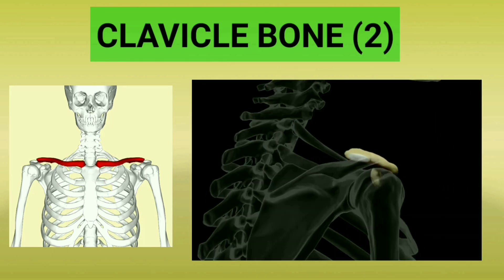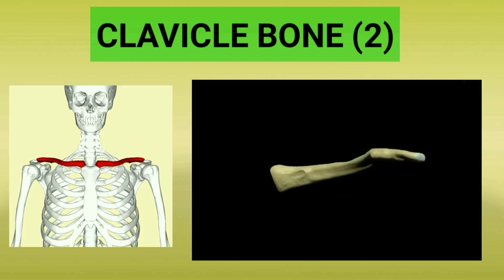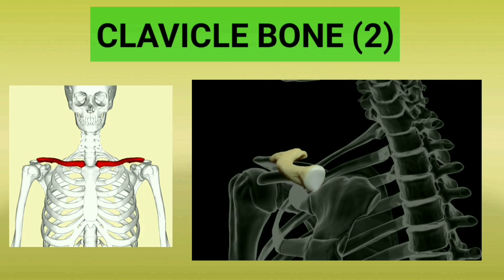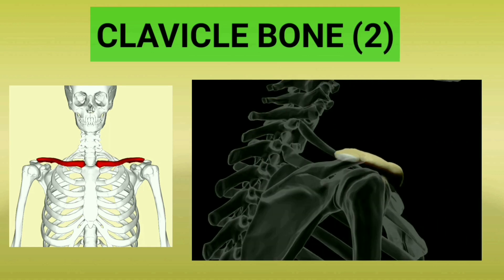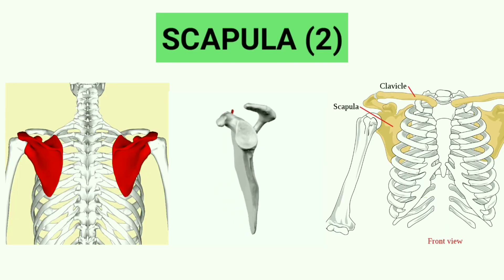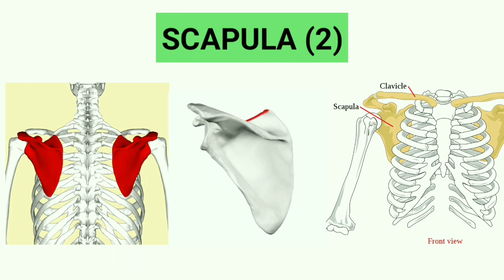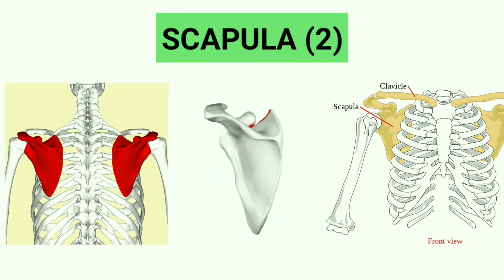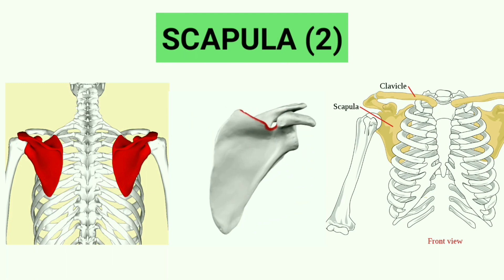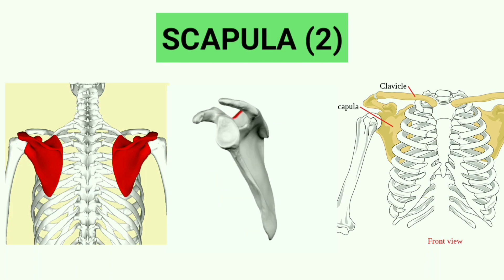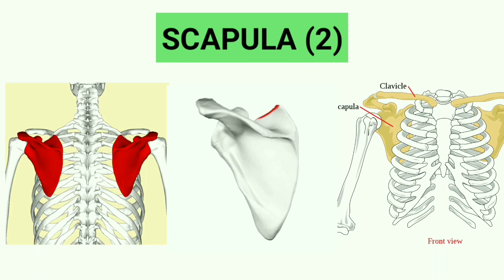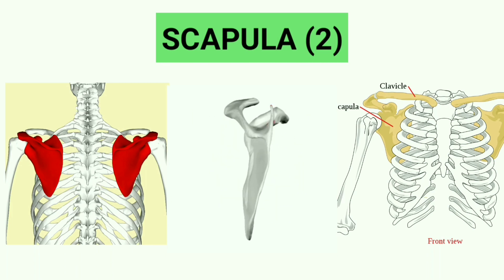As you see on your screen, this bone is called the clavicle bone, also known as the collar bone. Scapula — these are the shoulder blades. The scapula and clavicle form the shoulder girdle. The scapula is also called the shoulder blade.